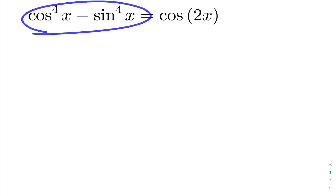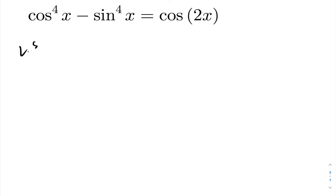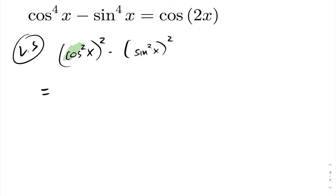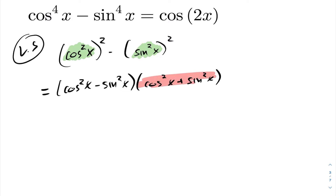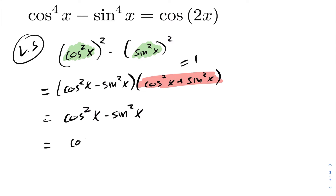I'll work with the left hand side here. We can express cos⁴x − sin⁴x as a difference of squares. Factoring gives us (cos²x − sin²x)(cos²x + sin²x). Right away we know cos²x + sin²x equals one, so this reduces to cos²x − sin²x, which by our double angle formula for cosine is exactly cos 2x — proving the identity.